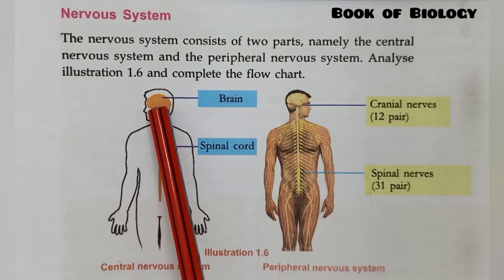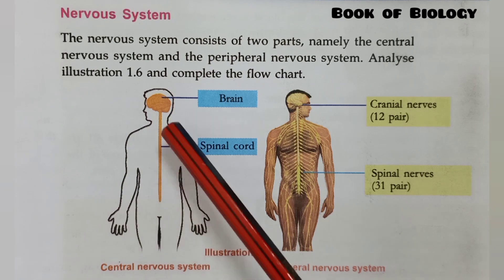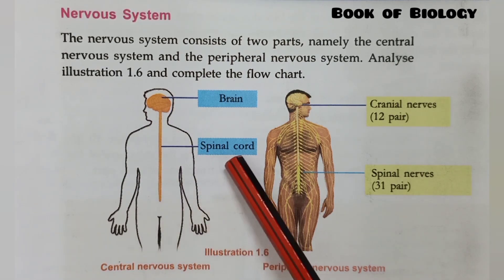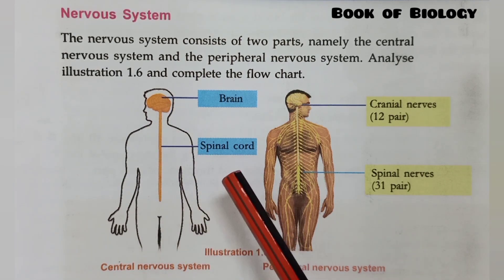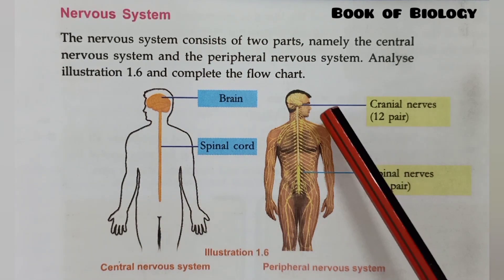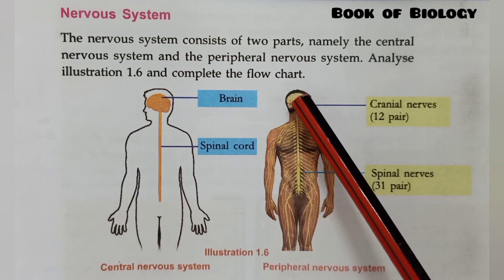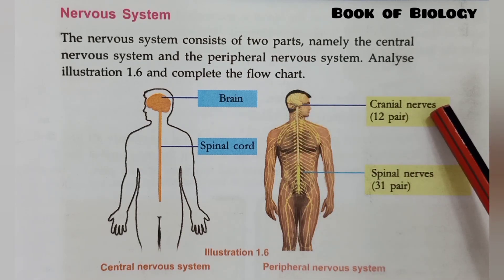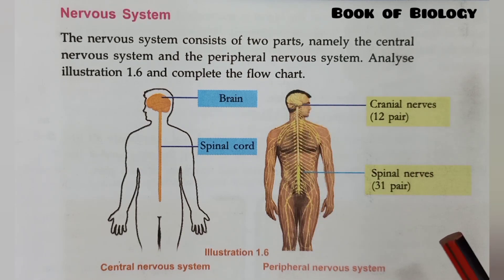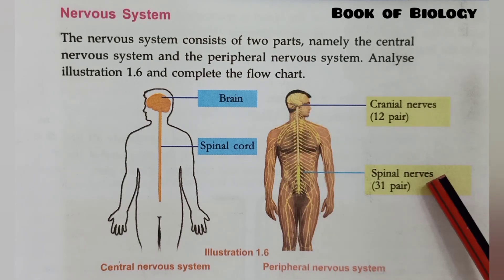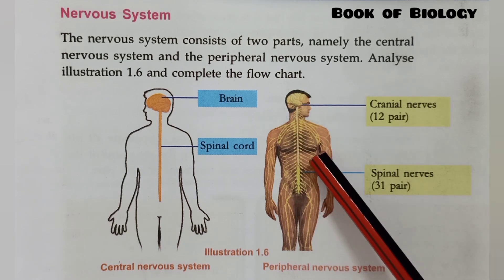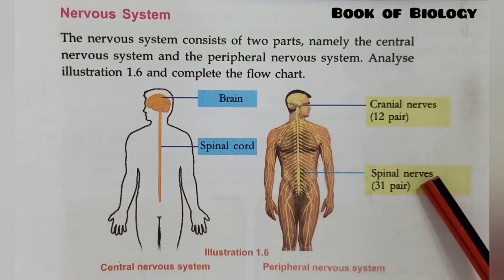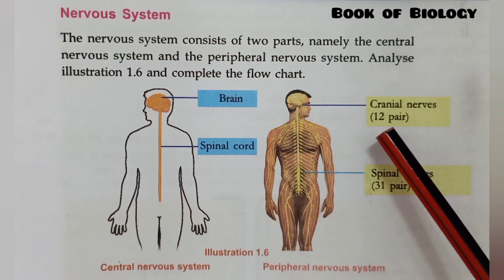You can see here the brain and spinal cord. The nerves that are connected to the brain are called cranial nerves, and the nerves that are connected to the spinal cord are called spinal nerves.